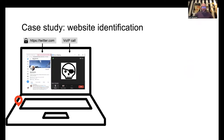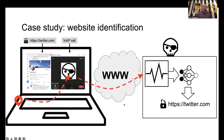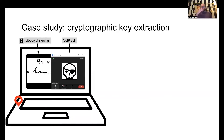We want to mount an actual attack and identify websites. We're assuming the victim is conversing using some VoIP software with an attacker while visiting websites like Twitter, and the audio from the victim's environment — plus any signals the microphone picked up — are transmitted to the attacker via the VoIP call. We used convolutional neural networks to extract the identity of the websites, reaching 94% accuracy for 14-way classification of websites. A deeper characterization using more websites is available in the paper.